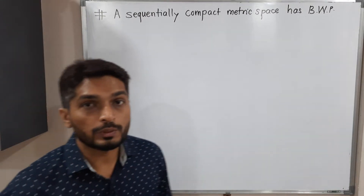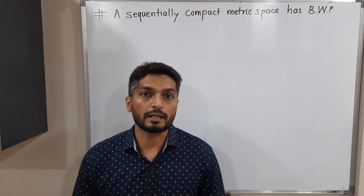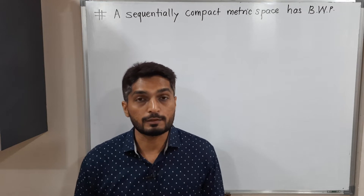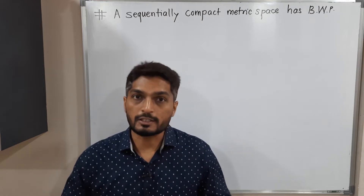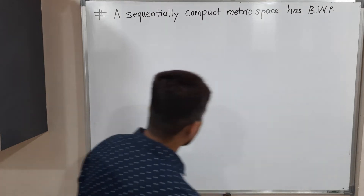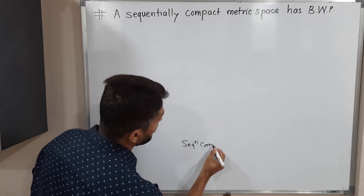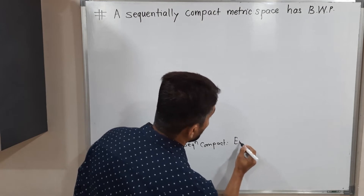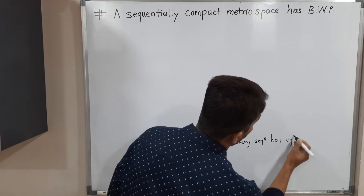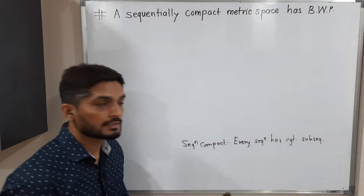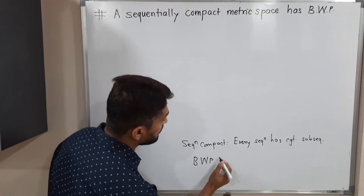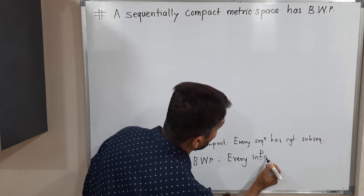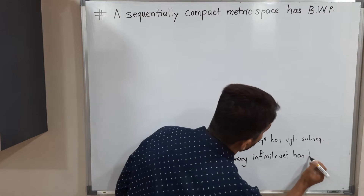In this video we are going to discuss the proof that if a metric space is sequentially compact, then it has the Bolzano-Weierstrass Property (BWP). In previous videos we have discussed the definition of BWP and the definition of a sequentially compact metric space. Let us recall these definitions before going to the proof. BWP means Bolzano-Weierstrass Property: every infinite set has a limit point.